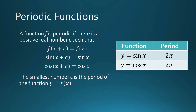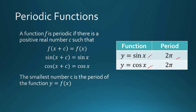From our last video, the period of y = sin(x) is 2π, and the period of y = cos(x) is 2π. We are careful with how we say it: we say the period of y = cos(x) is 2π. We don't say 'the period of cosine is 2π,' because there are variations to how we can define our circular functions.